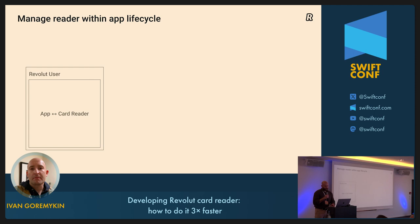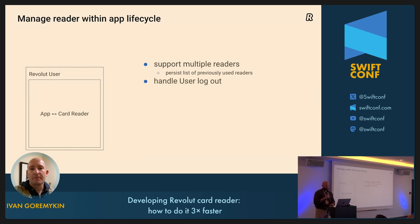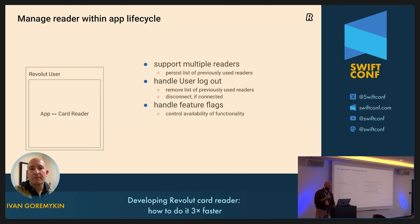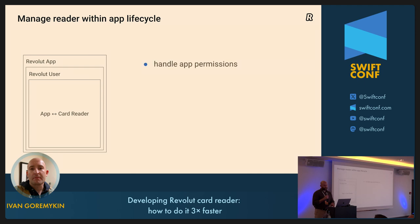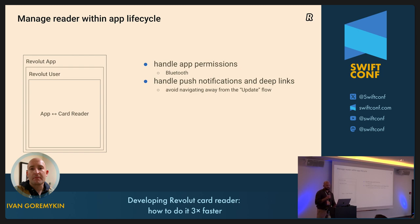At the user level, we need to support multiple readers — at any moment only one reader can be used in real time, but we can persist a list of previously used readers. We need to handle user logout: if a reader is connected and the user logs out, we need to remove the list of previously used readers and disconnect from the connected reader. We also need to handle feature flags to control availability of certain functionality based on the user. At the app level, we need to handle Bluetooth permissions, and handle push notifications and deep links — for instance, during an update flow we don't want to navigate away, so we ignore push notifications and deep links in that scenario.